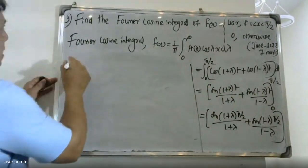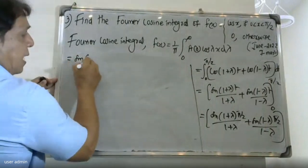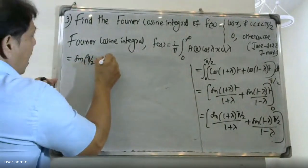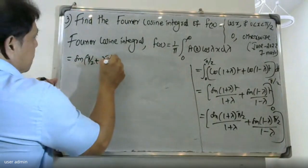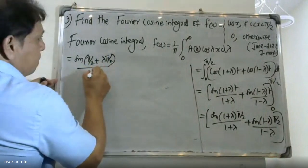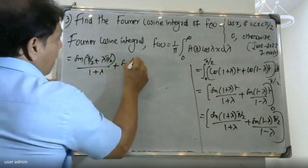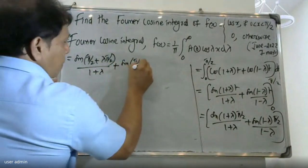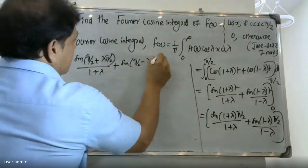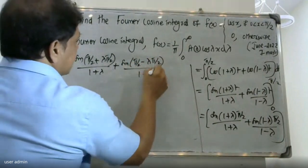This gives sin((1+λ)·π/2) / (1+λ) + sin((1-λ)·π/2) / (1-λ). We now simplify sin(π/2 + λπ/2) and sin(π/2 - λπ/2).